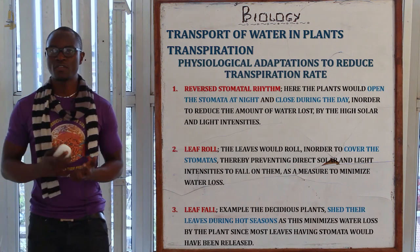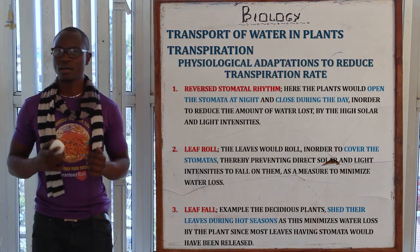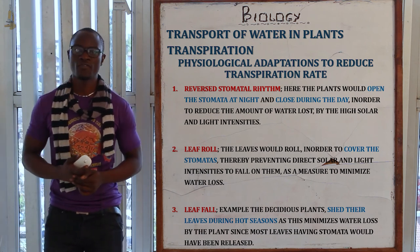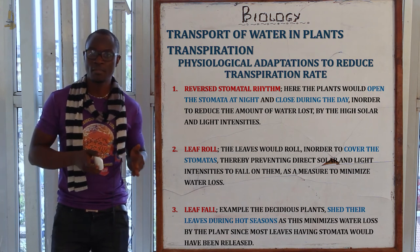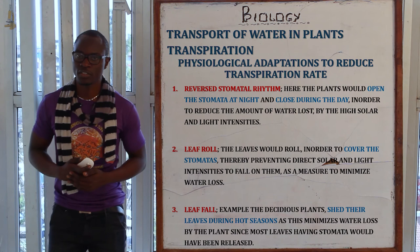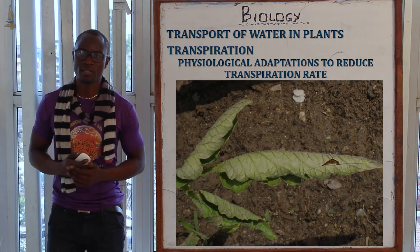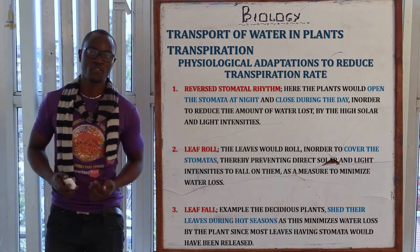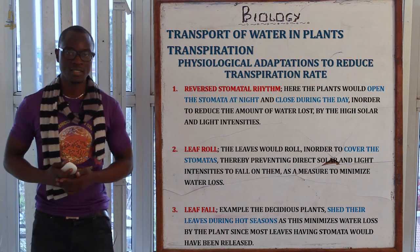Physiological adaptations to reduce transpiration include: reverse stomatal rhythm, whereby stomata open at night instead of during the day to reduce transpiration. Another adaptation is leaf rolling to cover the stomata so water vapor is not lost, and leaf fall, which is mainly experienced by deciduous plants.